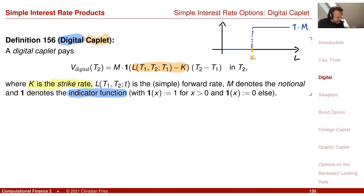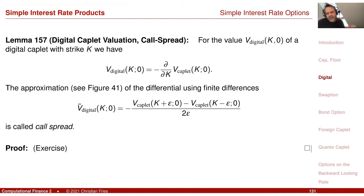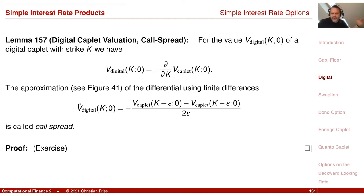If you value this product, it tells you something about the probability distribution. A nice relation is that you can approximate the value of the digital by a portfolio of call options. The value of the digital option is the derivative of the call option with respect to the strike — actually minus the derivative. Speaking about interest rates, the value of the digital Caplet is minus the derivative of the value of the Caplet with respect to the strike.